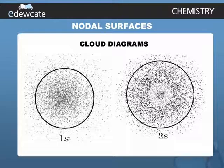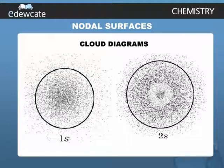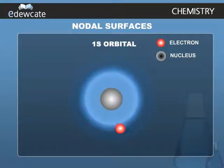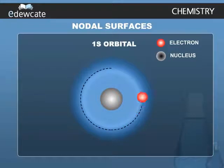These probability density variations can be visualized in terms of charge cloud diagrams. In these diagrams, the density of the dots in a region represents electron probability density in that region. Boundary surface diagrams of constant probability density for different orbitals give a fairly good representation of the shapes of the orbitals.